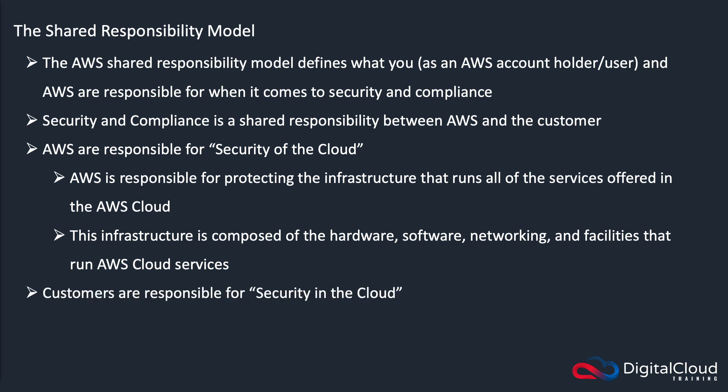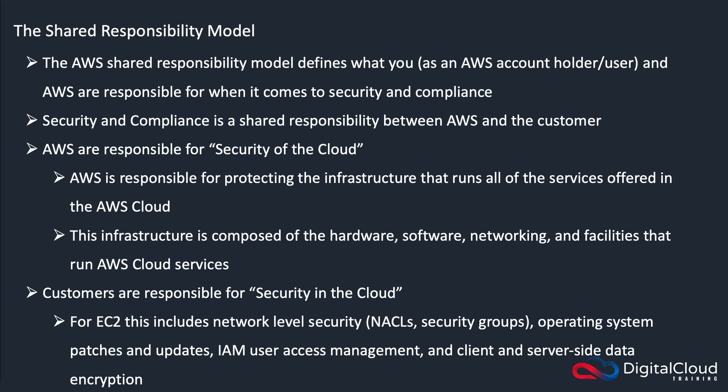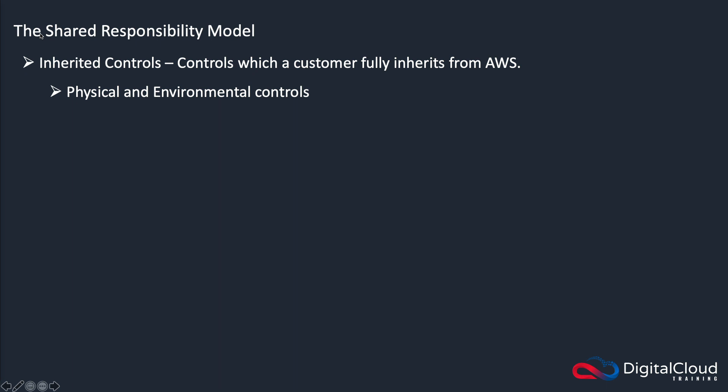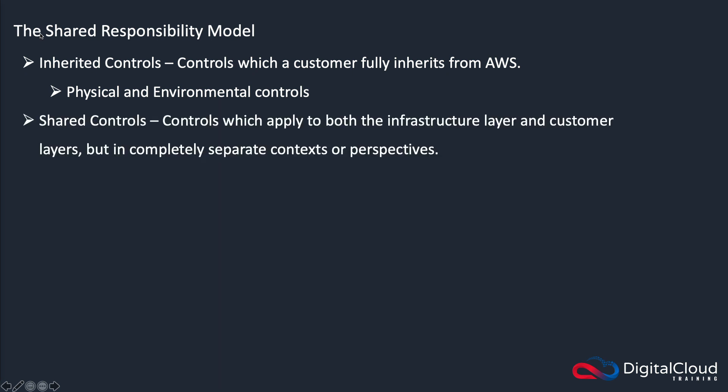Customers are responsible for security in the cloud. That includes EC2 network access control lists, security groups, operating system patches and updates, IAM user access management including groups, roles, and policies, and client and server-side data encryption. There are also inherited controls — controls which the customer fully inherits from AWS — and that includes physical and environmental controls.